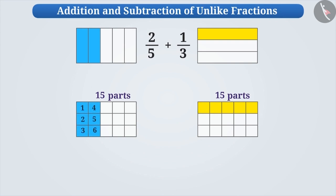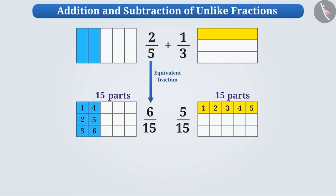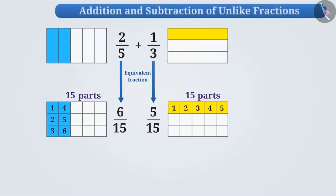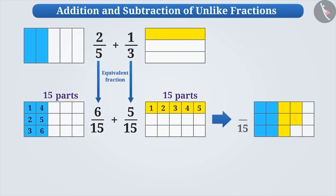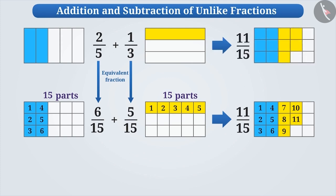Since here six out of fifteen parts are shaded, the fraction will be six by fifteen. Similarly, here five out of fifteen parts are shaded, therefore the fraction will be five by fifteen. Thus, the equivalent fraction of two by five is six by fifteen, and the equivalent fraction of one by three is five by fifteen. Now the total number of shaded parts in both the rectangles is eleven out of fifteen. Therefore, we can say that two by five parts and one by three parts of a chocolate make eleven by fifteen parts of a chocolate.